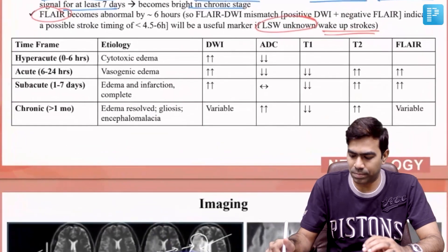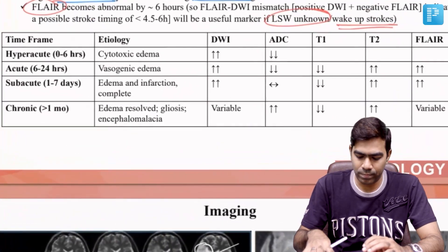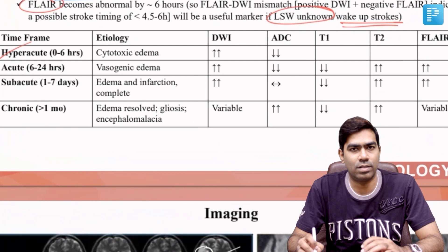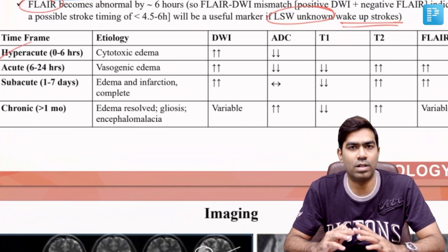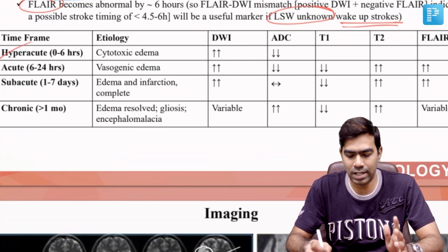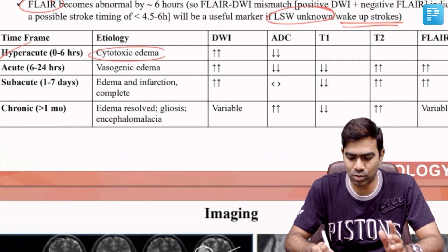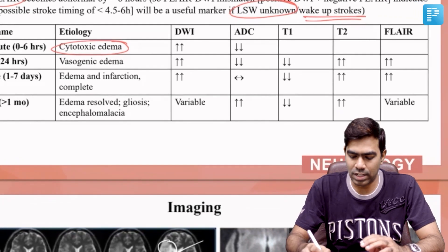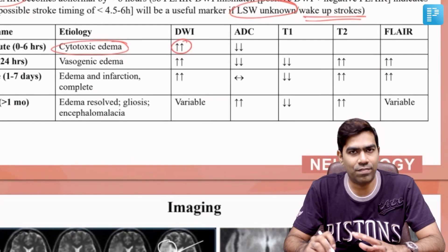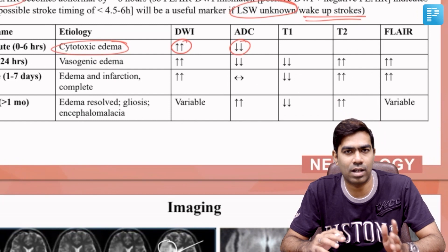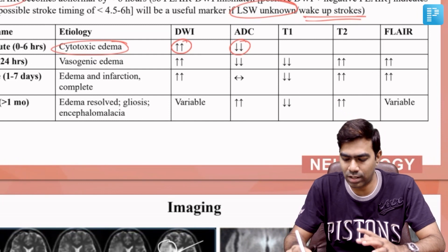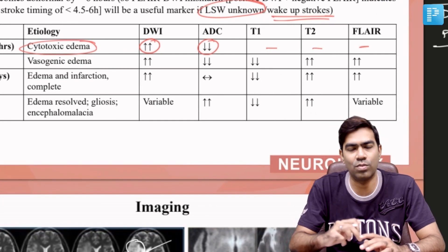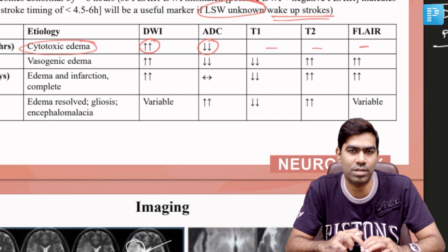Looking at the table — in the hyperacute phase, MRI changes are driven by cytotoxic edema. DWI shows definitely high signal, ADC shows corresponding low signal, and there are no changes in the first 6 hours on T1, T2, or FLAIR imaging.